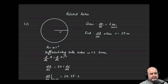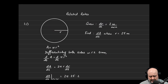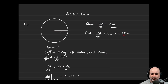We're given this ideal setup of a perfect circle. We're given that dr/dt, the rate of change of radius with respect to time, is 2 meters per minute. We're asked to find the rate of change of area with respect to time when the radius is exactly 25 meters. We start with the area of the circle — a formula you should memorize: Area is πr².